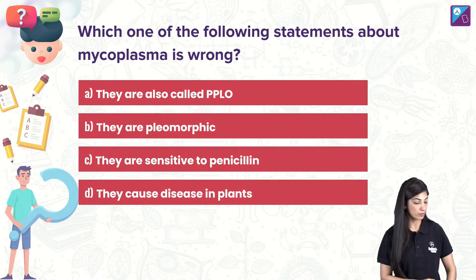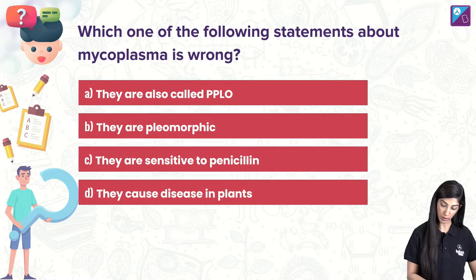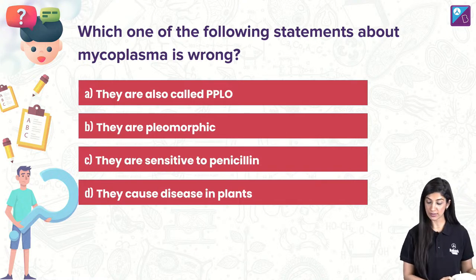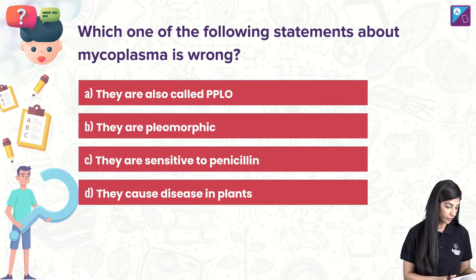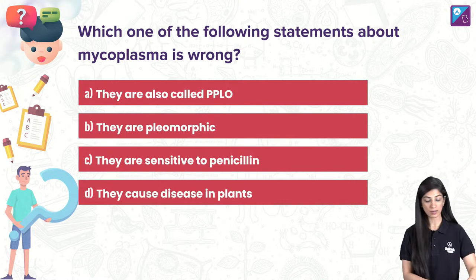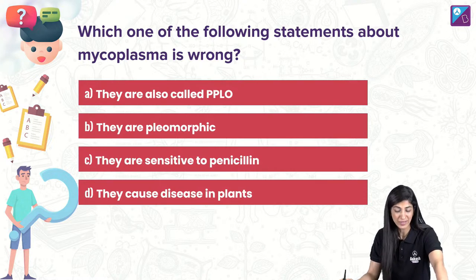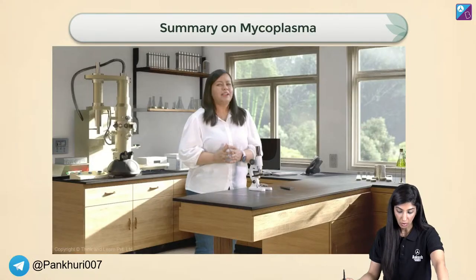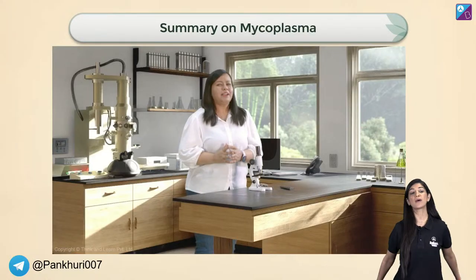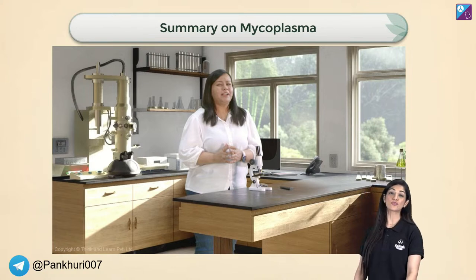Previous year question: which of the following statements about mycoplasma is wrong? Options: they are also called PPLO (true), they are pleomorphic (true), they are sensitive to penicillin (false — this is the wrong statement), they cause disease in plants (true).